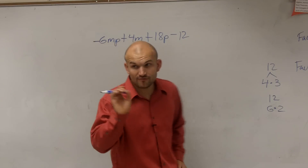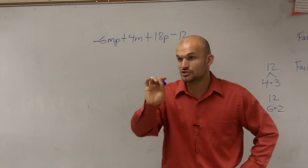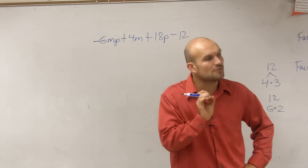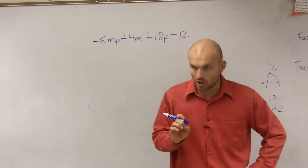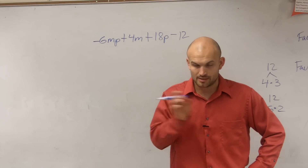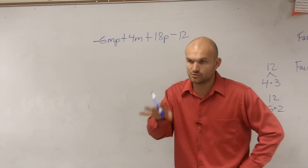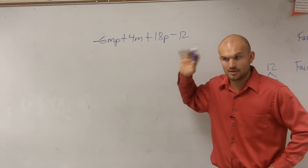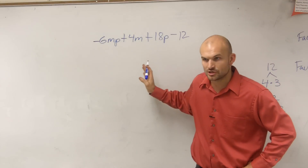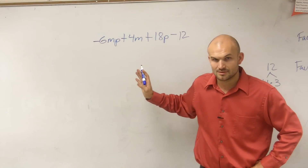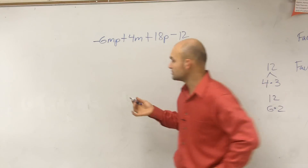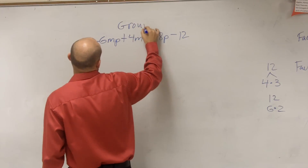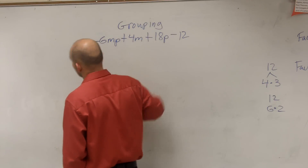So now you could factor out just the two. However, there's another way that we can factor this even smaller. I'm going to show you, because you will get to problems where maybe you can't even factor out a number. But what happens when you have four terms? When you have four terms, you're going to want to write this — guys, this is what we call factor by grouping.